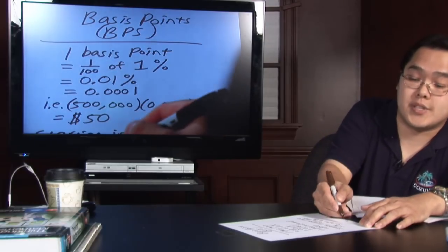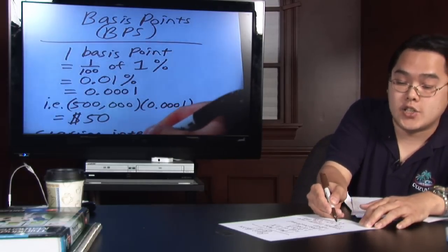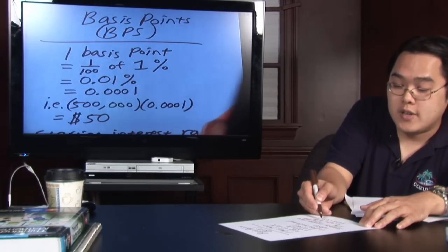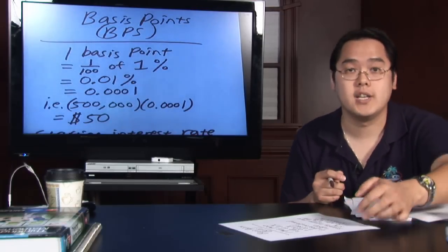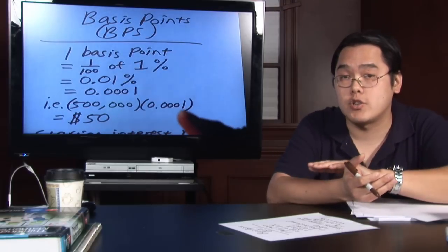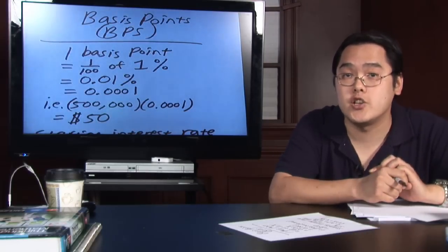If there's an increase, you take the 5 and add 0.5 to it and that will give you 5.5% interest rate. So basis points can be used, in addition to commission, to reflect changes in interest rates.